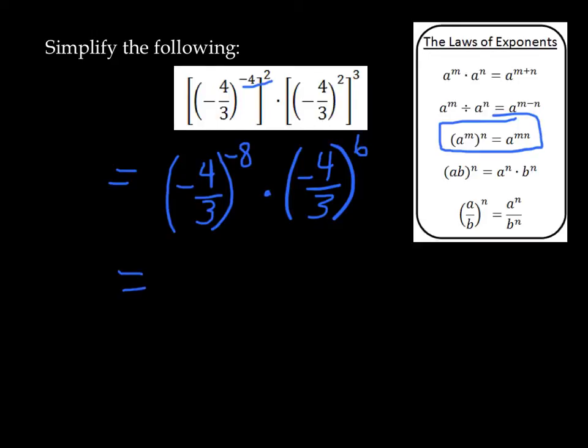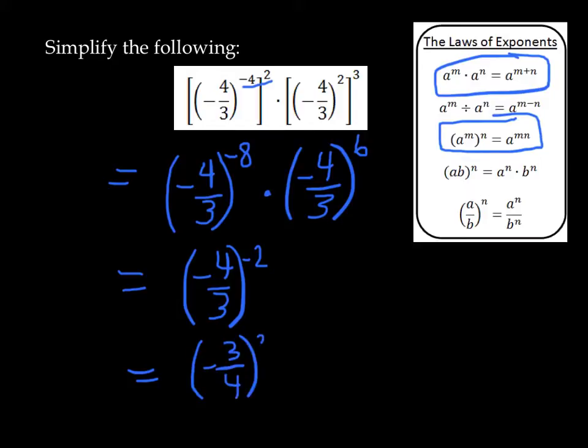Now, going back to the first law of exponents here, negative 4 thirds to the power of negative 8 times negative 4 thirds to the power of negative 6, gives me negative 4 thirds to the power of negative 2. Using negative exponents now, that can be rewritten as negative 3 quarters to the power of positive 2, which is 9 over 16. And that's positive 9 over 16.